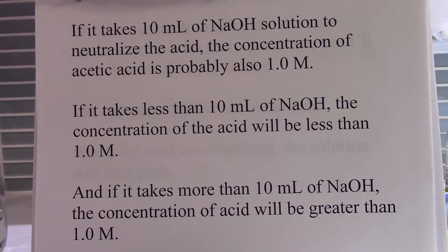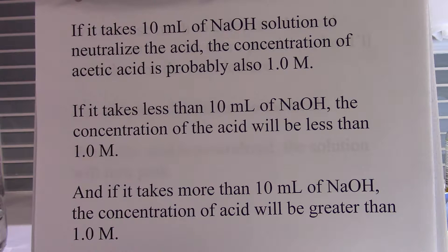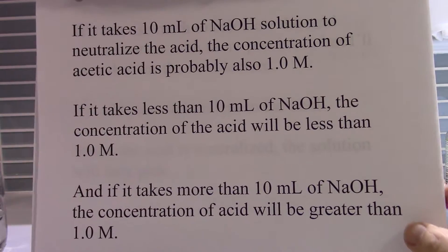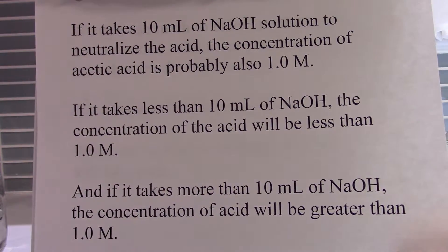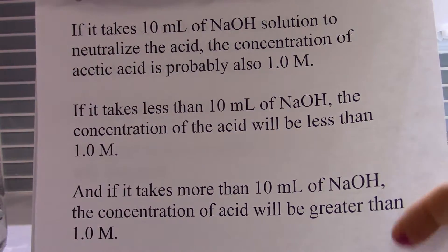If it takes 10 milliliters of sodium hydroxide solution to neutralize the acid, the concentration of the acetic acid is probably also one molar. If it takes less than 10 milliliters, the concentration of the acid will be less than one molar. If it takes more than 10 milliliters, the concentration of the acid will be greater than one molar. That's roughly how we get an estimate of the acid concentration.